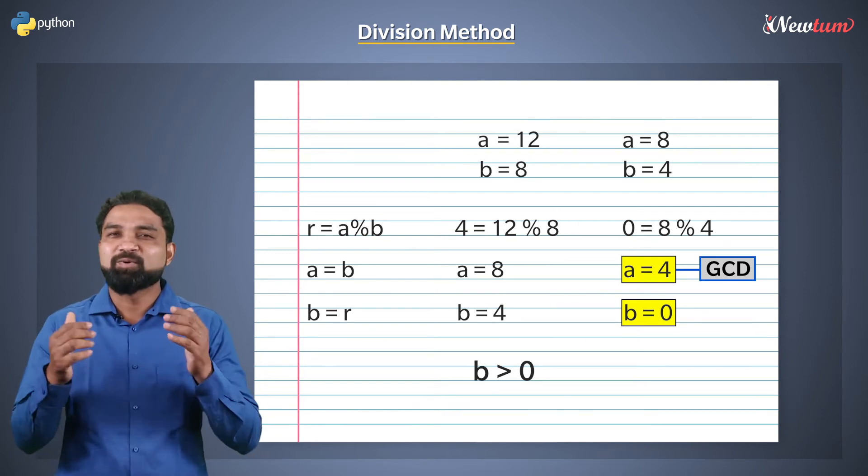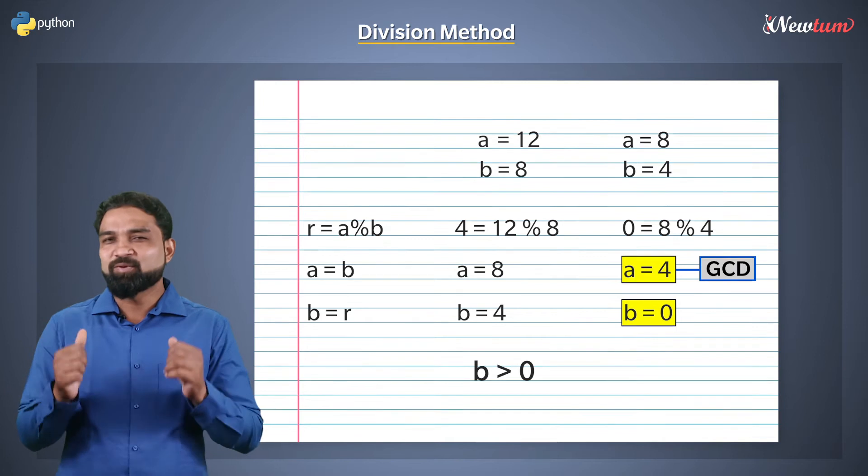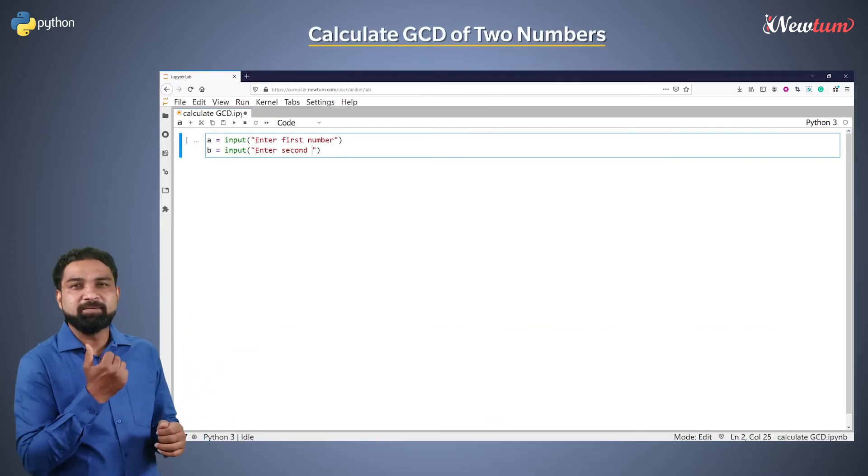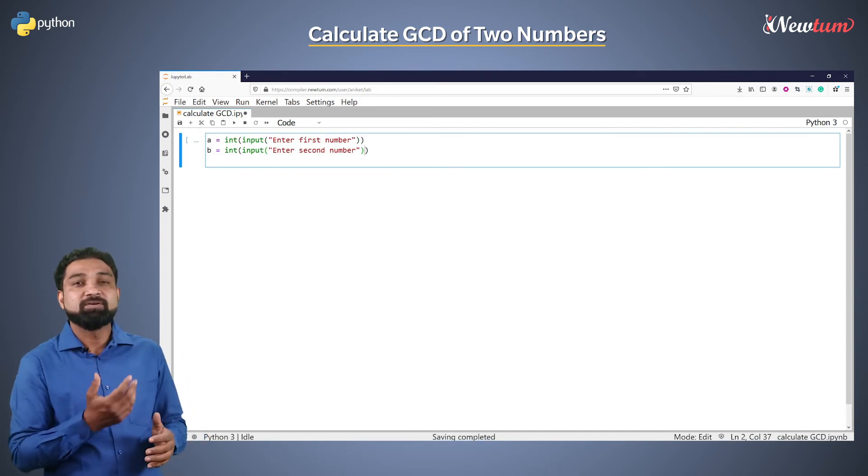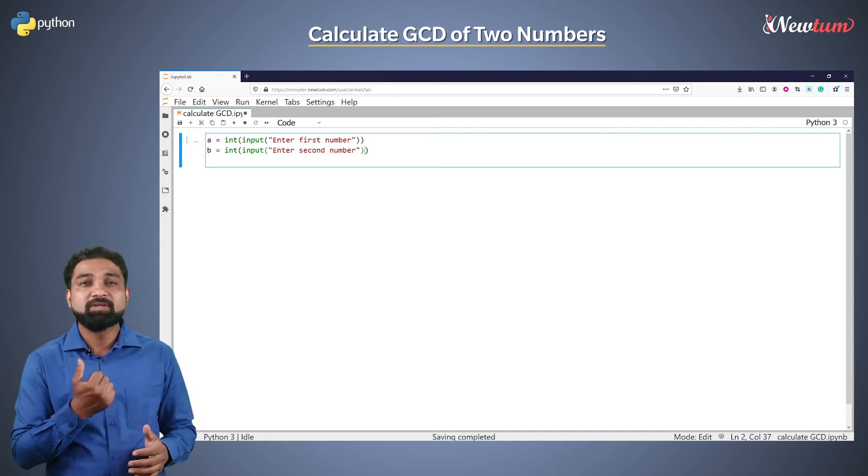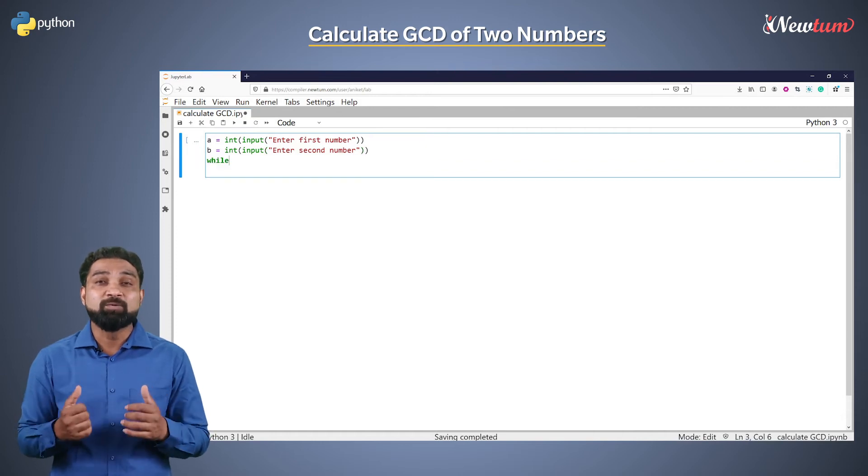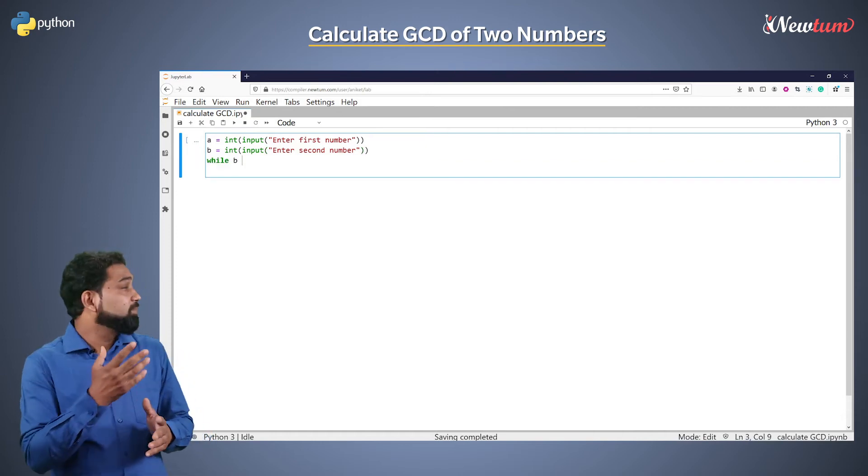Let's start writing our program. First, accept two numbers a and b with the input function and convert them into integers with the int function. Then write the while loop with condition b greater than 0.